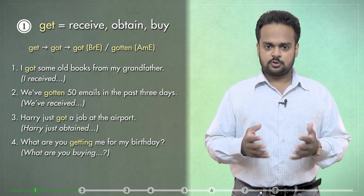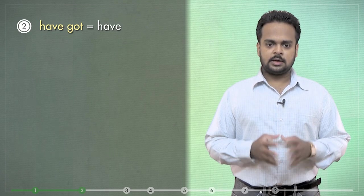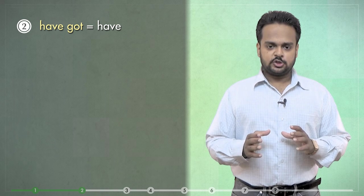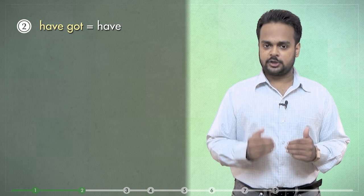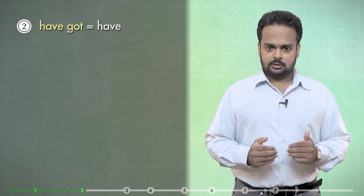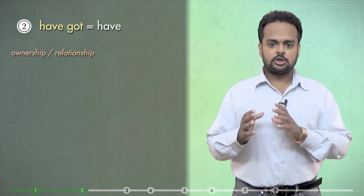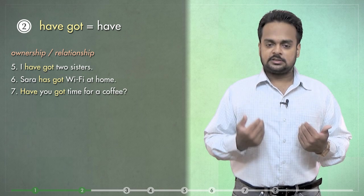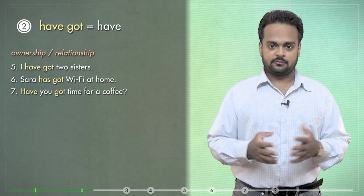OK, let's move on to the second use. In British English, the expression have got is used a lot to mean have. It's used in American English as well, but it's more common in British English. The expression is used in two ways. The first is to talk about ownership or relationship. For example, I've got two sisters. Sarah has got Wi-Fi at home. Have you got time for a coffee?